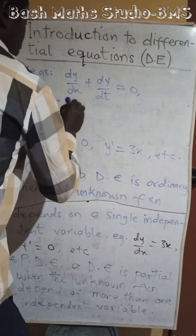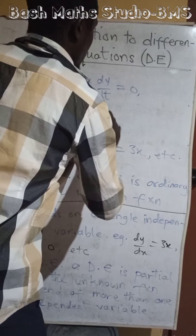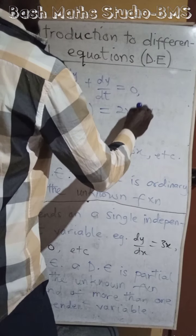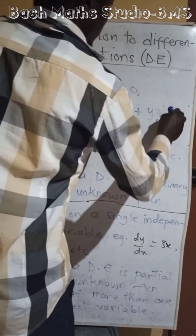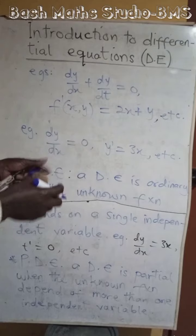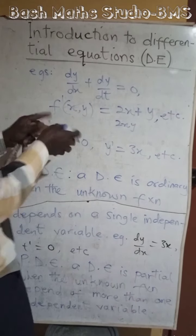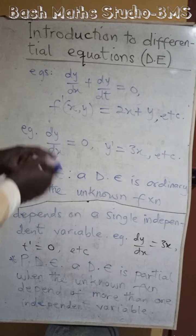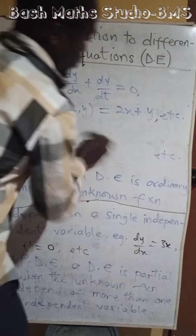For example, f prime of (x, y) equals 2xy, and so on — as long as the unknown function is dependent on more than one variable. These are a few examples of partial differential equations.